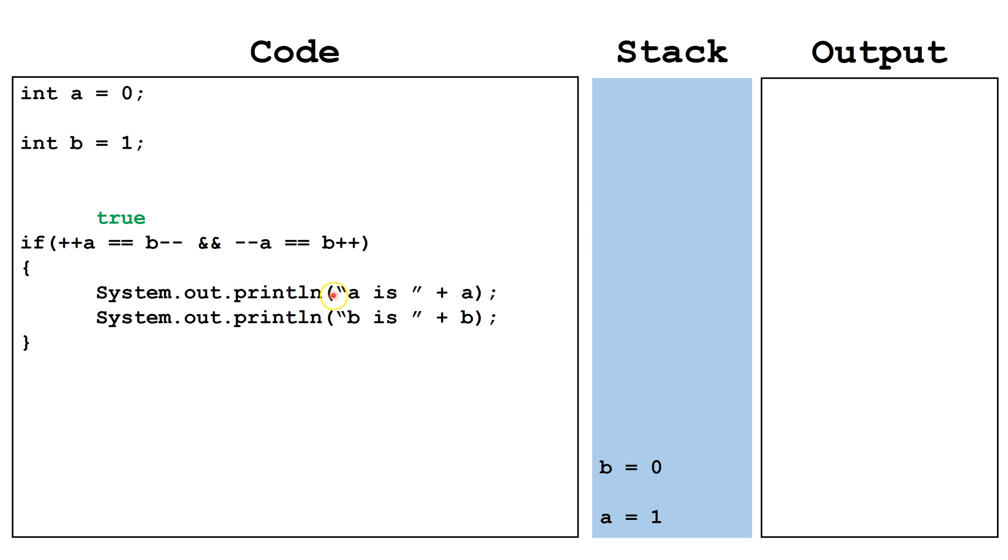Now, when we compare these two, we must look at the current values of a and b. In this case, a is again decremented before the comparison, so that brings it down to zero. b will be incremented, but not until after the expression is evaluated, so for now, b remains zero. This will also evaluate to true, because zero equals zero. Notice when we complete this second expression, b has incremented to one.